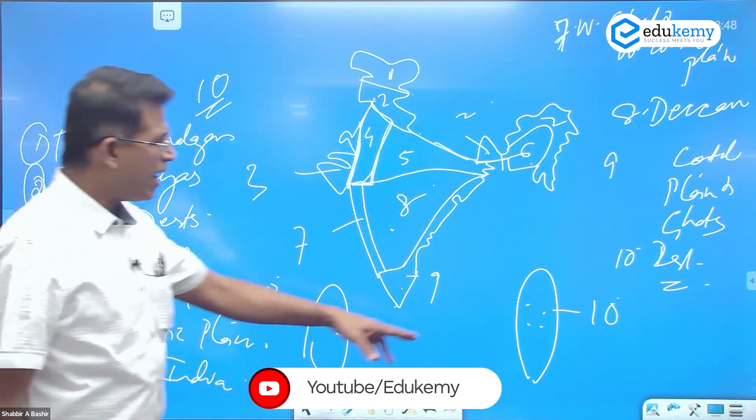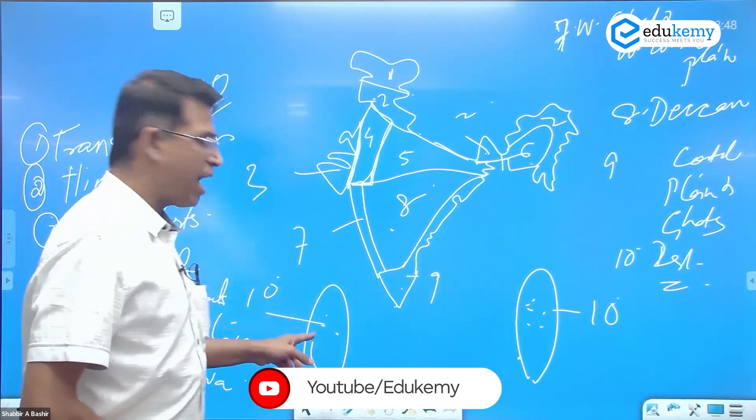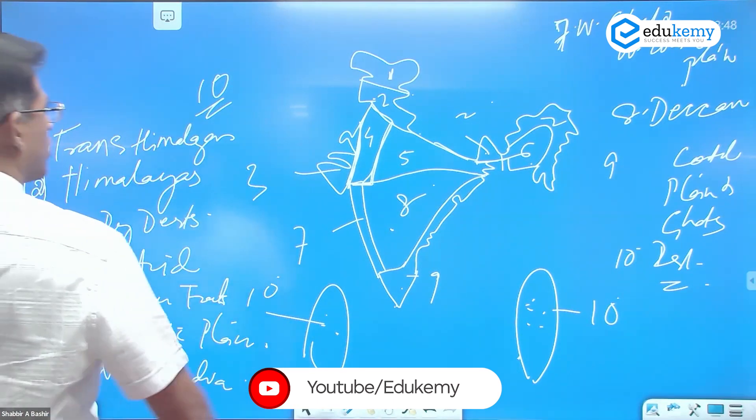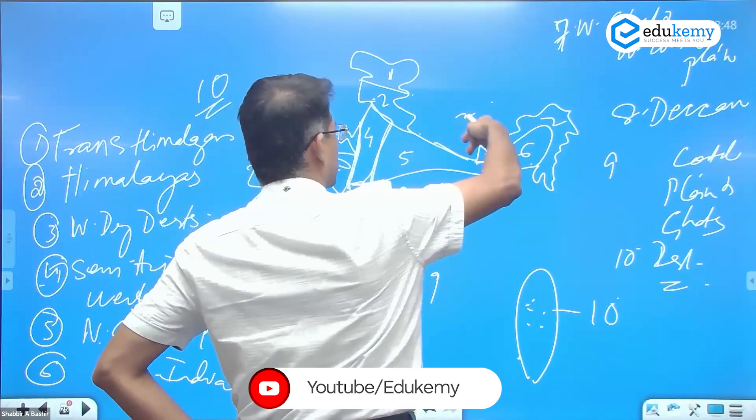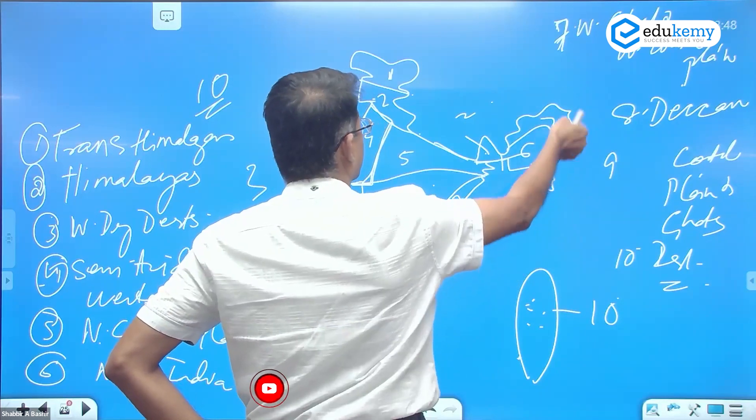Ten is islands - Andaman, Nicobar Islands and Lakshadweep Islands. These are two Himalayas - two and Himalayas extension called Purwanchal Hills.